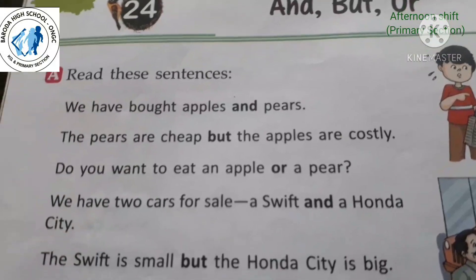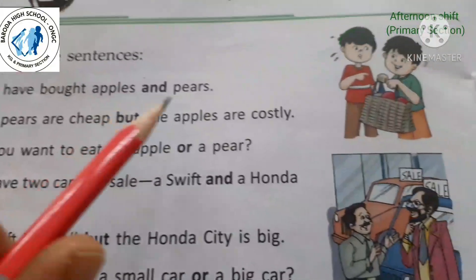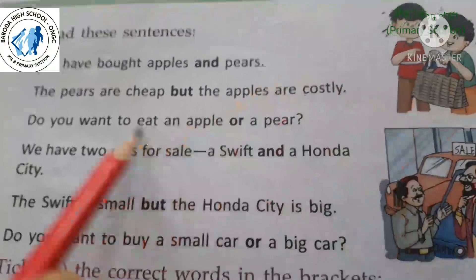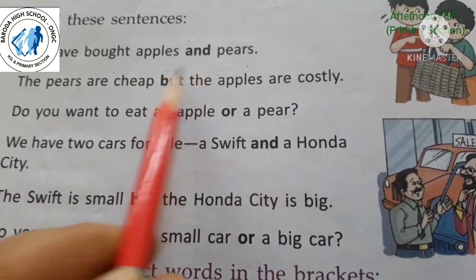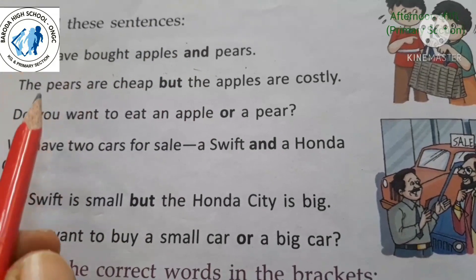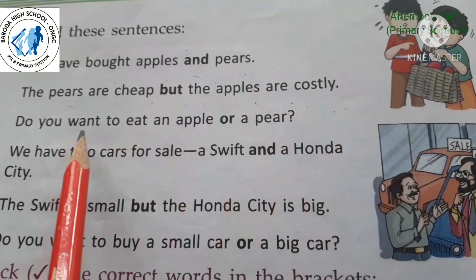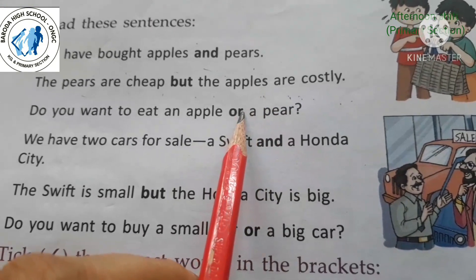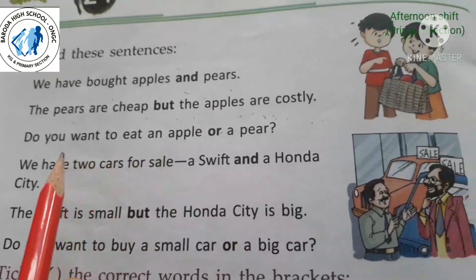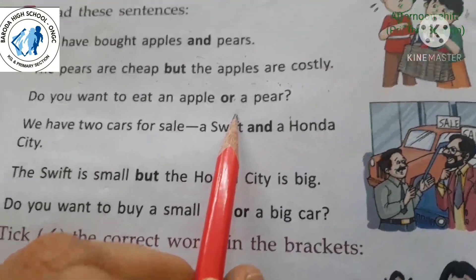Now let's start different exercises. First, read these sentences. 'We have bought apples and pears.' Two things are joined with the help of 'and'. Then, 'The pears are cheap but the apples are costly' — here they are showing differences, an opposite idea. Third sentence: 'Do you want to eat an apple or a pear?' — asking for a choice, selecting between two options.